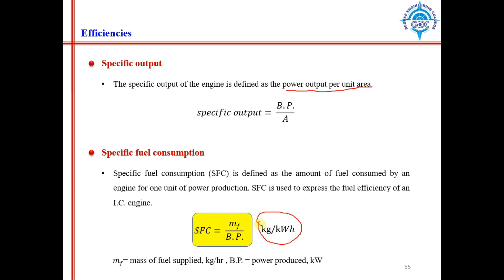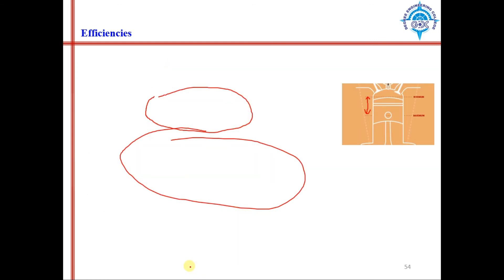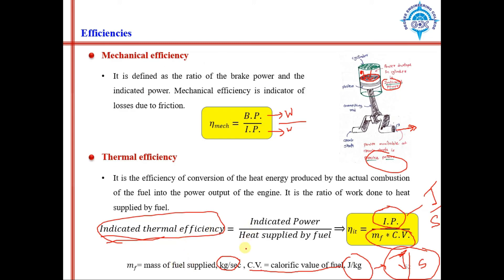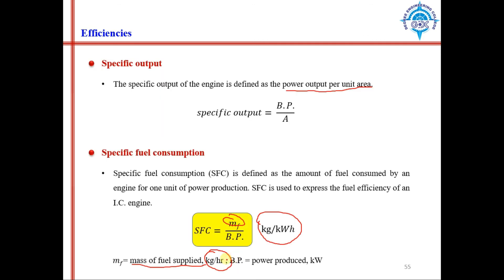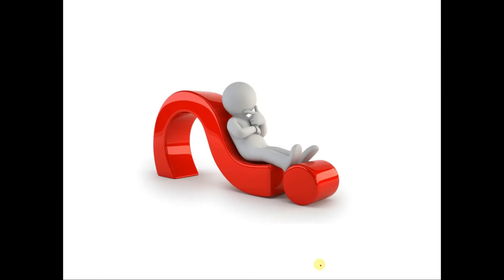The unit of specific fuel consumption is kg per kilowatt-hour, where Mf is mass of fuel in kg per hour. Note the difference: in the thermal efficiency equation, mass of fuel is in kg per second, whereas in the specific fuel consumption equation, it is in kg per hour, and brake power is in kilowatts.